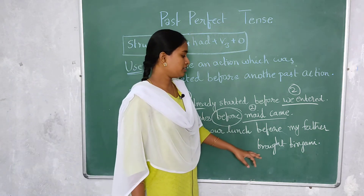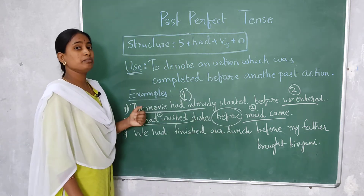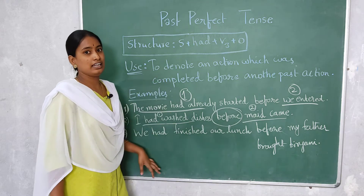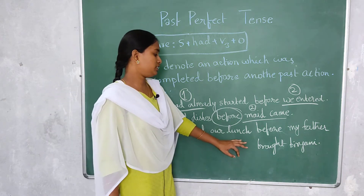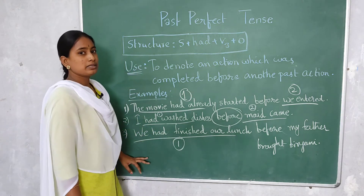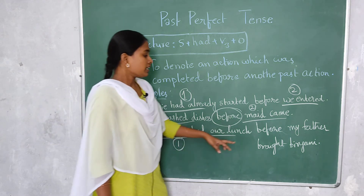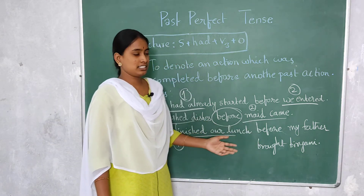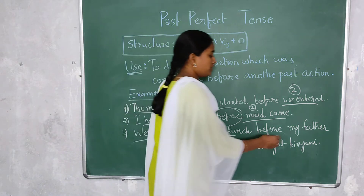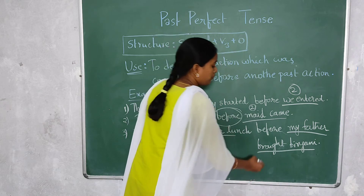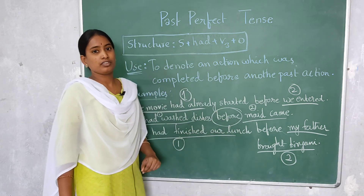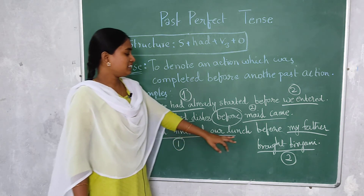Next example: 'We had finished our lunch before my father brought biryani.' They were waiting for the biryani, felt hungry, and ate lunch. Then the father brought biryani — too late, as they had already eaten. The first action is finishing lunch, so we use past perfect tense — subject + had + V3. By seeing the word 'before,' we clearly understand this is the first action. Bringing biryani is the second action, so simple past is used.